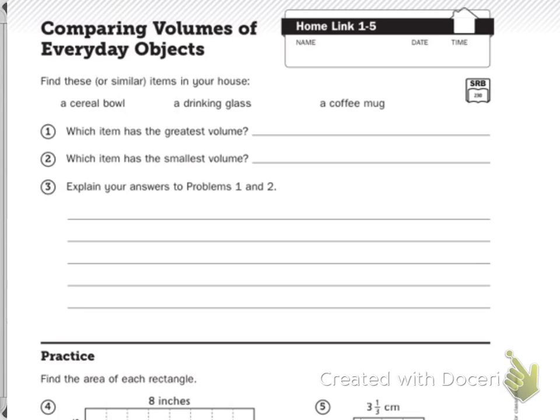Now you have to decide which item has the greatest volume. The one I have that has the greatest volume is a coffee mug. I have a big old coffee mug I like to use.